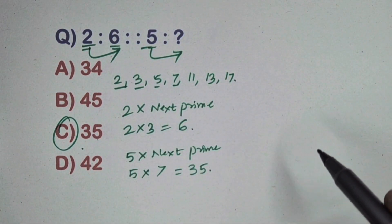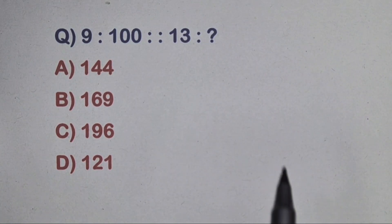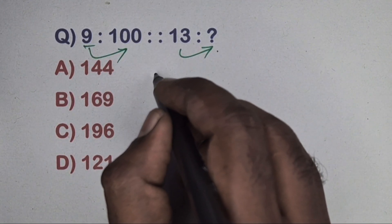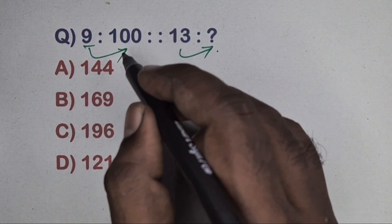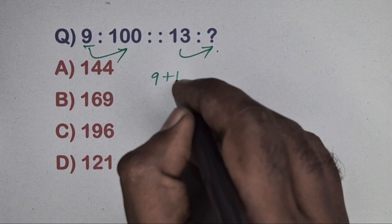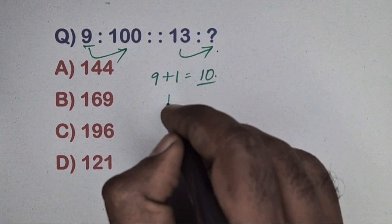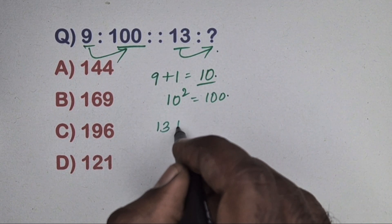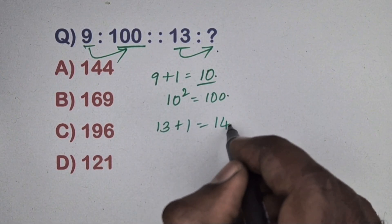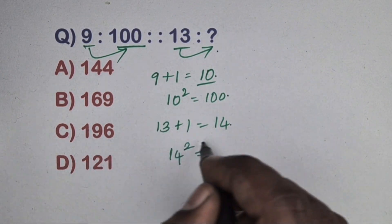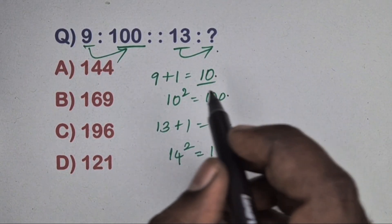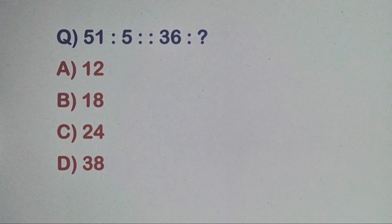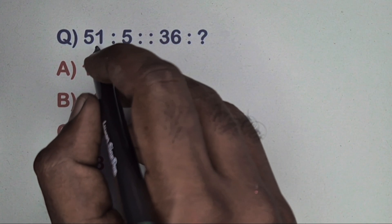Next question: 9 is related to 100 and 13 is related to which number? Take 9, add 1 to get 10, then 10 squared equals 100. Same way, take 13, add 1 to get 14, and 14 squared equals 196. Option C is the correct answer.